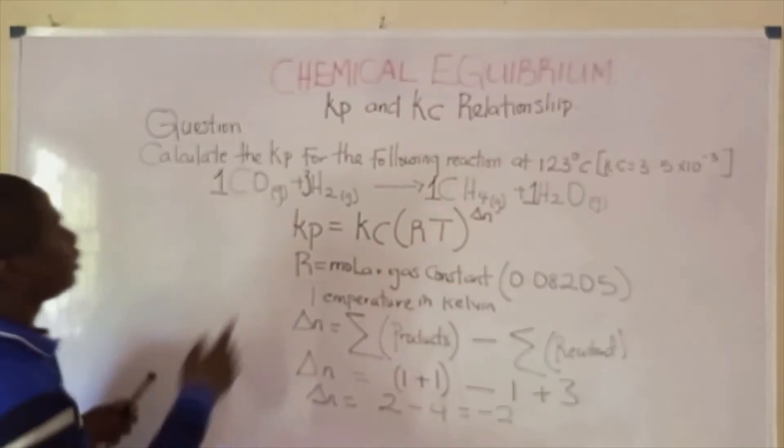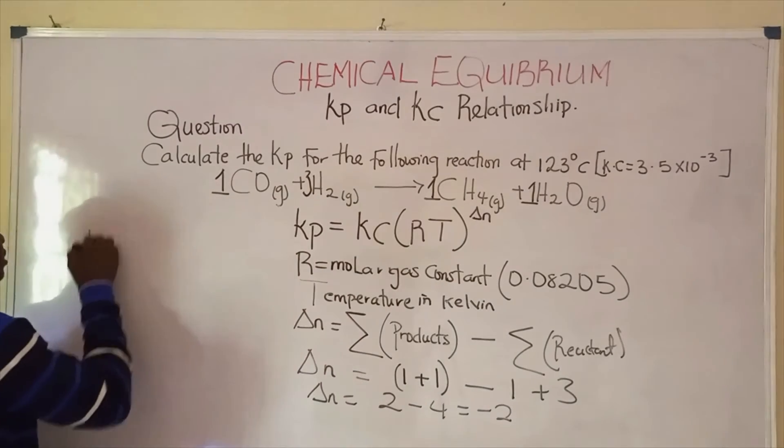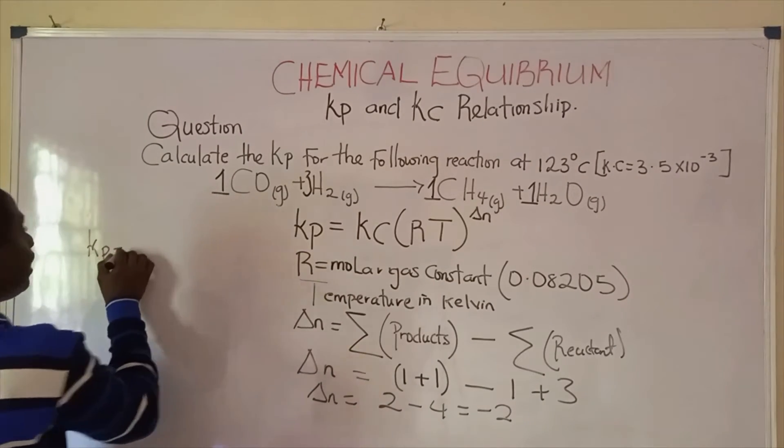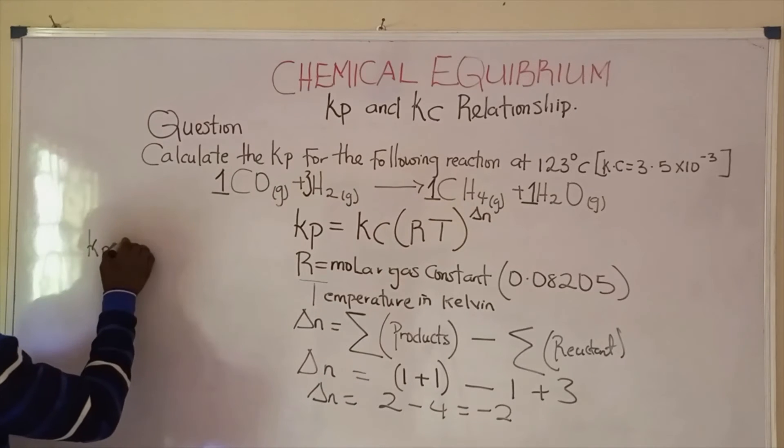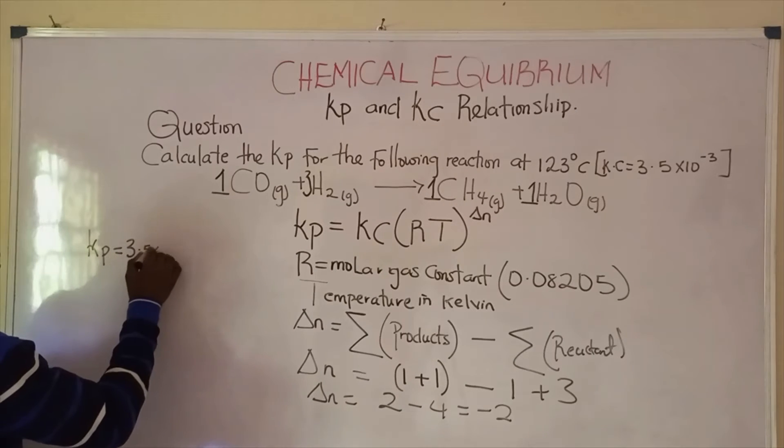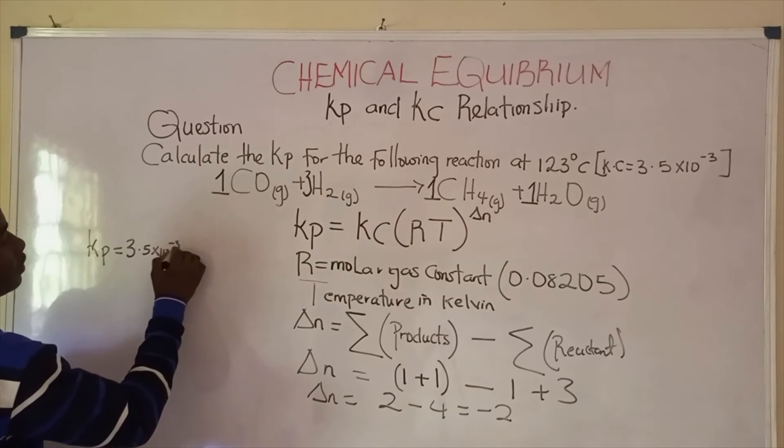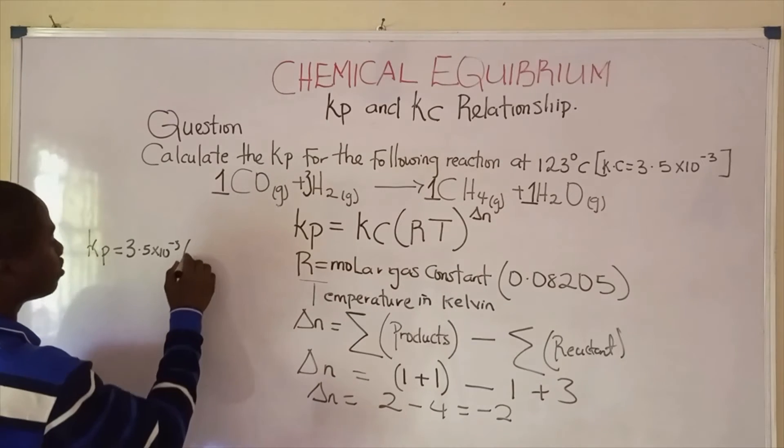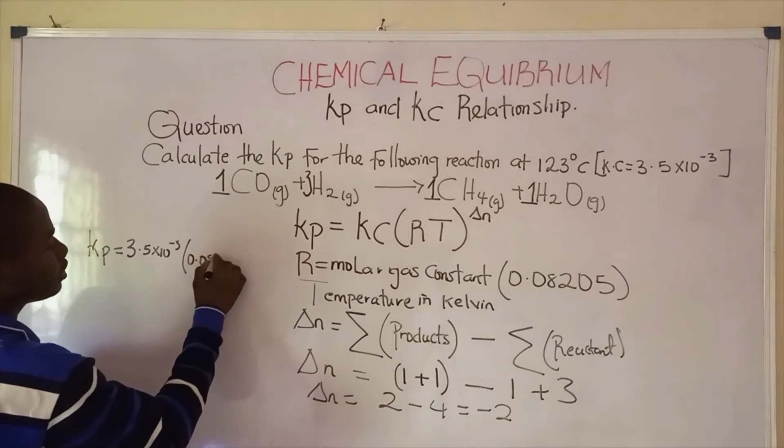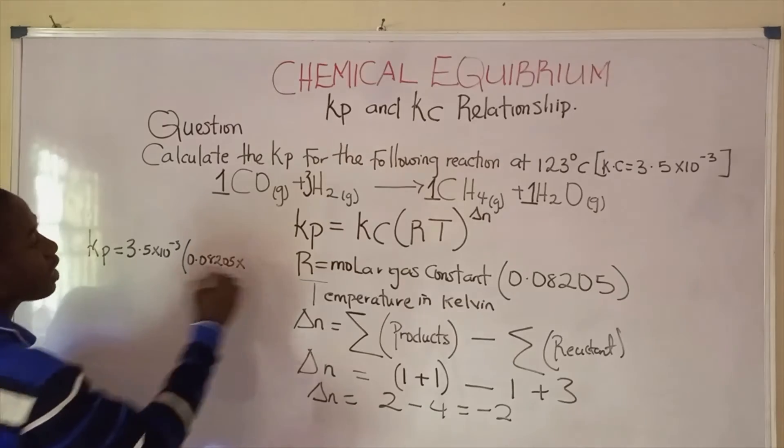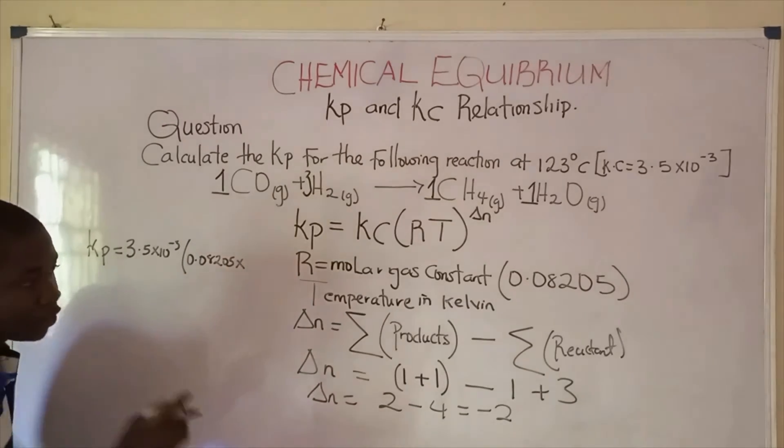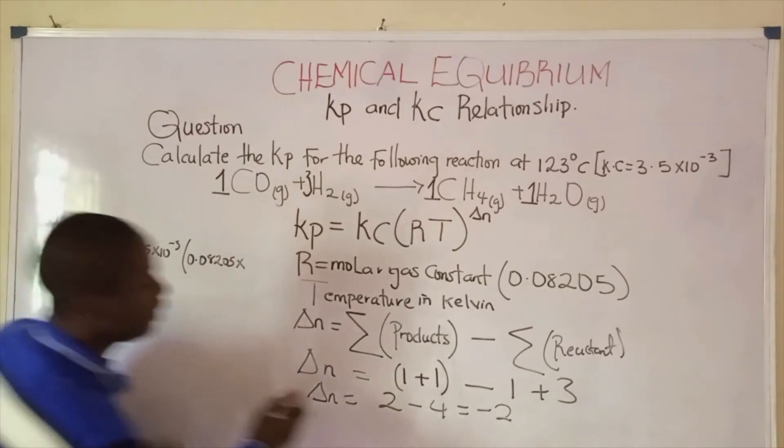They are asking us to get Kp. So Kp will now be equal to Kc, given the equation which is 3.5 times 10 raised to the power of negative 3, times the molar gas constant 0.08205, times temperature.